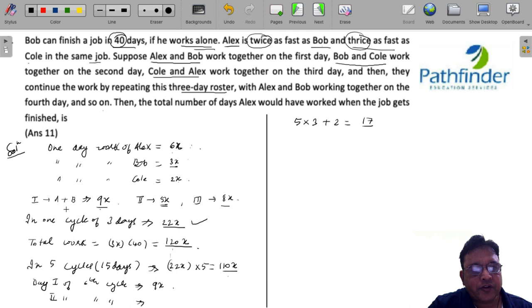Now, in each cycle, Alex works on first day and Alex works on the third day. So in each of the five cycles, Alex has worked for two days. Plus, on day one of the sixth cycle, Alex has worked. So the total amount of days or total number of days for which Alex must have worked is 11, which should be your answer.